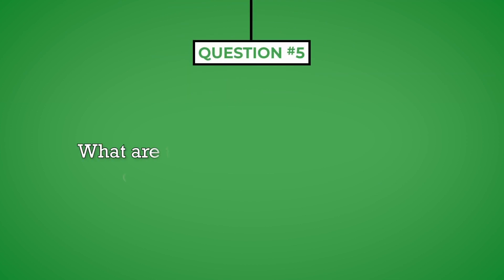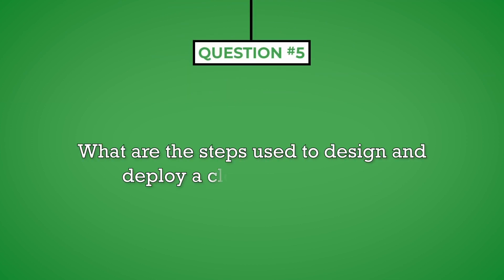Question number five: what are the steps used to design and deploy a cloud architecture? By asking this question, the interviewer indicates they are interested in deploying a cloud architecture but may not have the experience or resources needed. This is probably one of the main reasons they are looking to hire a cloud engineer, and may have been disclosed in the job description. A good strategy may be to create a pro forma plan to develop a cloud architecture and present it to the interviewer, especially if this requirement was mentioned in the job description.